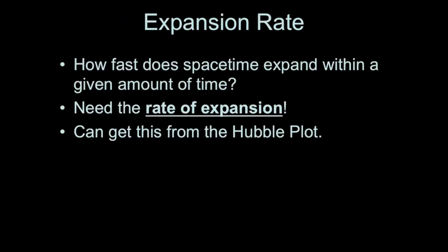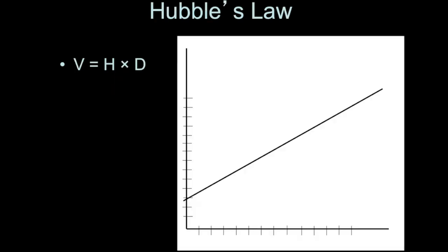So how fast does the universe expand in some amount of time? We need to know the rate of the expansion of the universe in order to determine this. And it turns out that we can get this from looking at the Hubble Plot, which is a graph that shows the velocity of galaxies versus their distance.